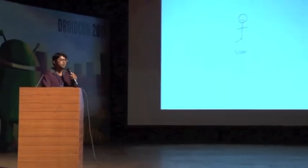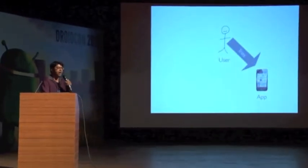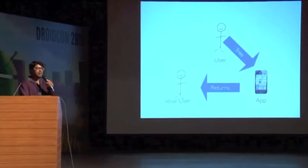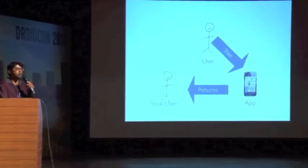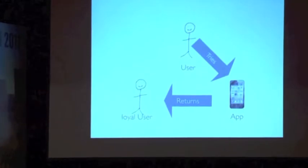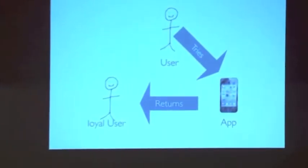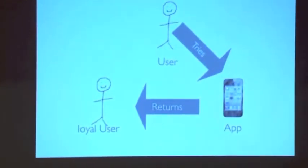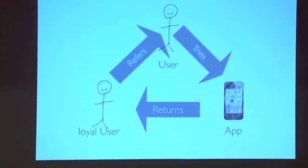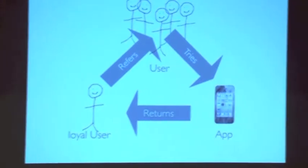So to set the basics, let's just understand how apps become popular. How do apps grow over time organically? The model is really simple. First you have a user who tries your app. They like the app, so they come back and they become a loyal user.